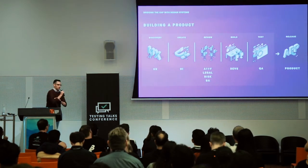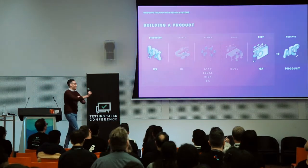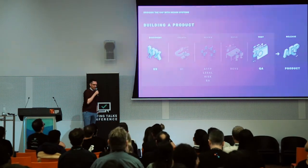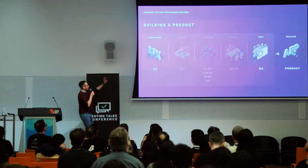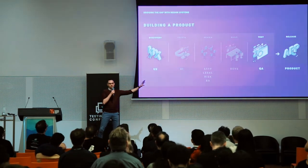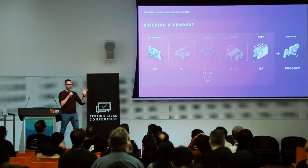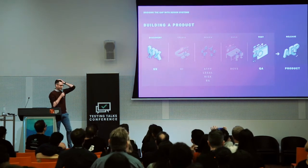When we look at building a product, we've got a lot of people involved. We've got UX, UI, accessibility, legal risk, business analysts, devs, QA — all coming together to make this product. But you can see there's a massive gap between UX and QA. We're at opposite ends of the spectrum here.